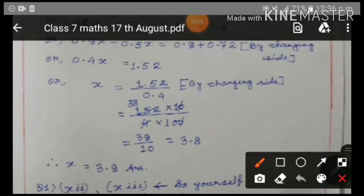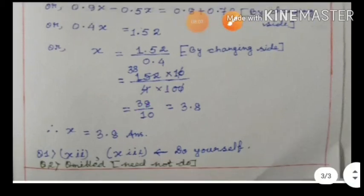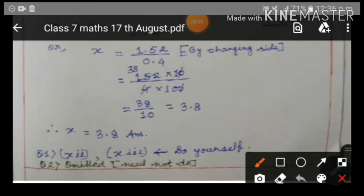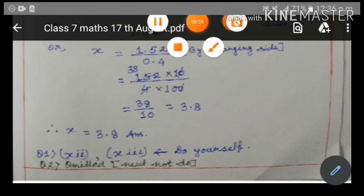The value of x is 3.8. Children, question number one parts 12 and 13 you are going to work out yourselves. Question number two has been omitted, so just cross it out with a pencil in your book. Thank you for today.